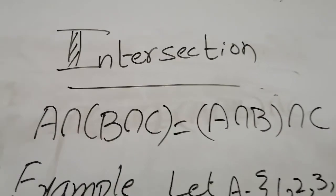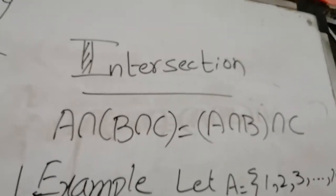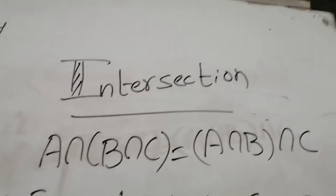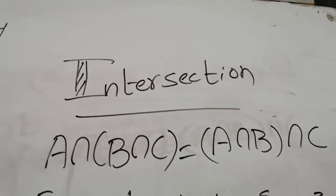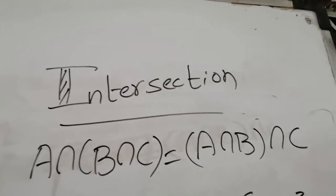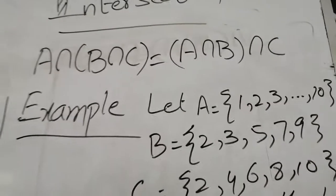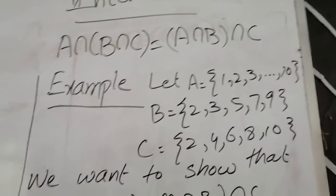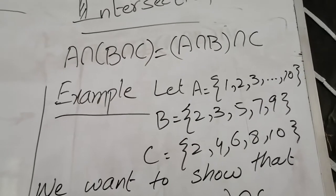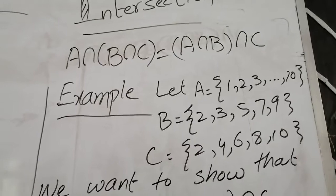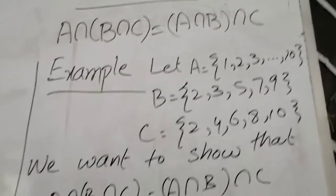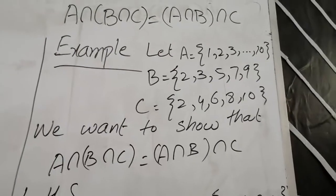Now we discuss the associative property for intersection. It also involves a change of brackets: A intersection (B intersection C) equals (A intersection B) intersection C. The sets are: A is the first ten natural numbers, B is the first five prime numbers, and C is the first five even numbers. We want to show the associative property for intersection.